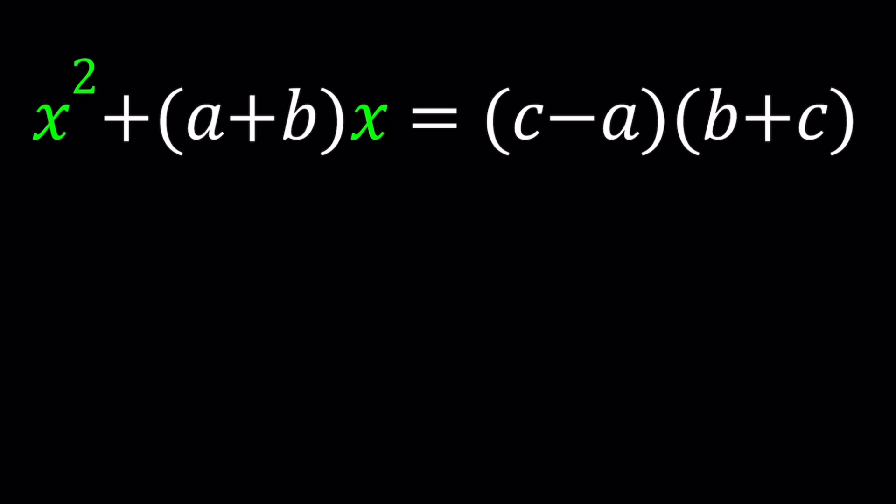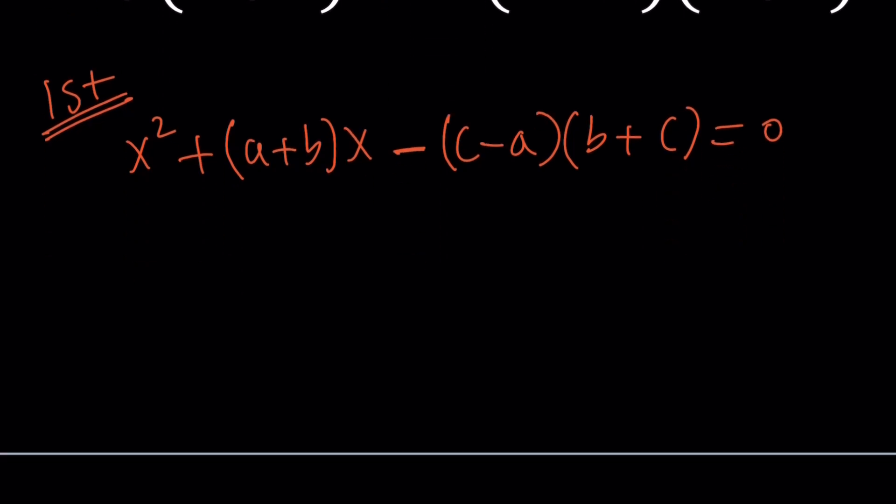So first method is no pain, no gain. We're going to use the quadratic formula. But before that, let's go ahead and put everything on the same side. And we're going to do it with the second method too. Now, one thing you can do is you can kind of get rid of the negative by negating one of these terms. And this is a good candidate. So I can do this and just write this as plus a minus c times b plus c, and that is equal to zero.